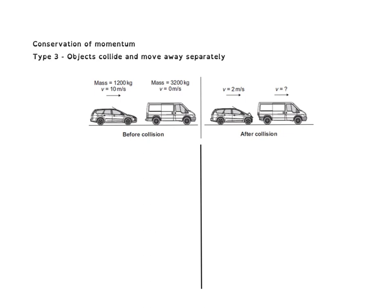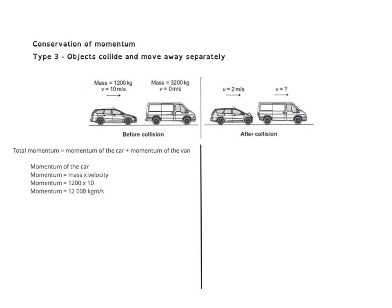To solve this we need to work out the momentum of the car and the van before the collision and find the total momentum before, which will equal the total momentum after. The total momentum before equals the momentum of the car plus the momentum of the van. For the car: momentum equals mass times velocity, so 1,200 times 10, giving us 12,000 kilogram metres per second.